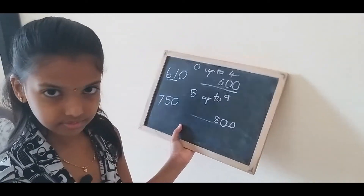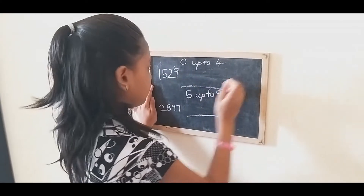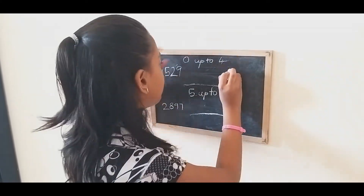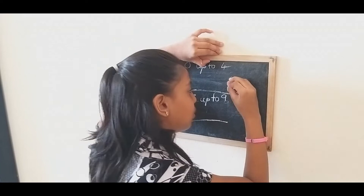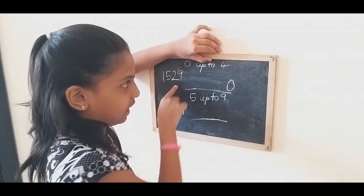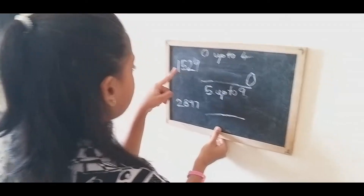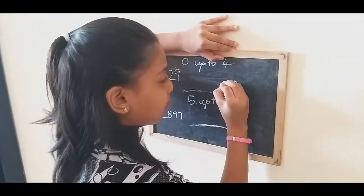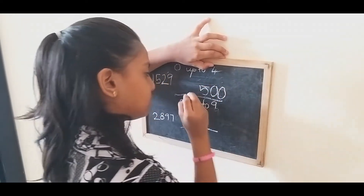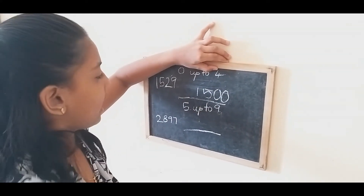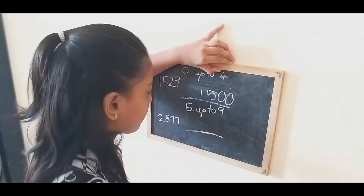Now I am going to show you some examples for thousands in rounding off to the nearest hundreds. Whatever number is in the ones place, we put zero. Then we check the tens place — if it is zero up to four, we put zero and keep the other numbers the same. So the answer is one thousand five hundred.